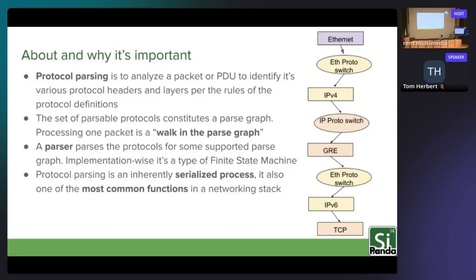Processing one packet is what we call a walk in a parse graph. On the right side we have an example packet — a walk of Ethernet, IPv4, GRE, IPv6, and TCP. A parser then is a mechanism that parses the protocols, which is basically implementing the parse graph and has the capabilities to walk packets in the parse graph.